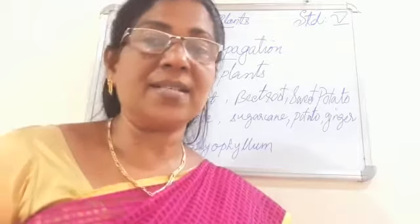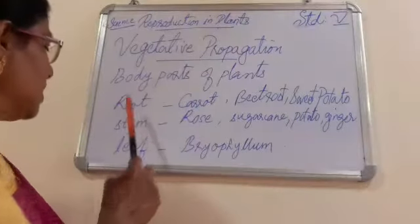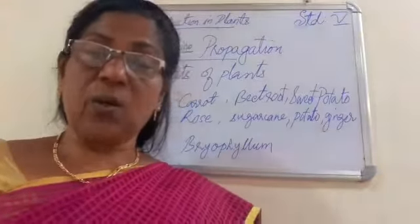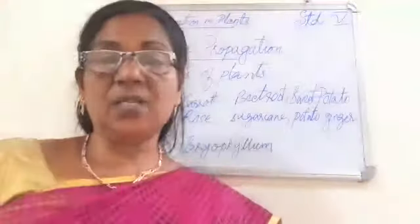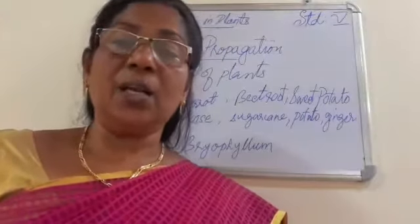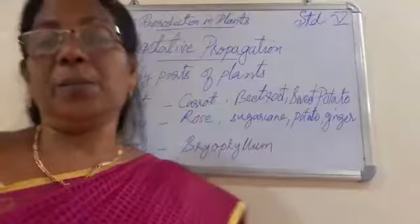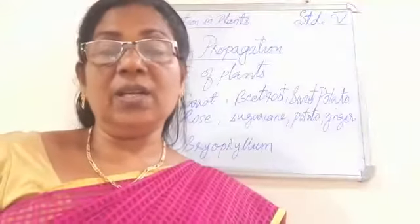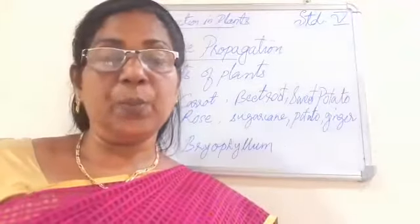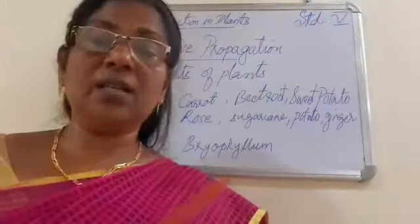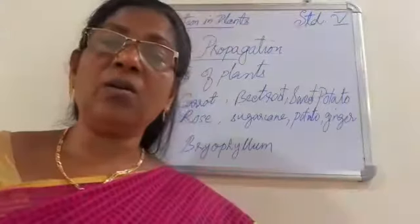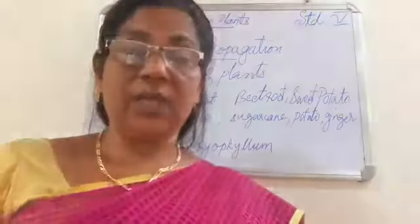The body parts of a plant are the root, stem, and leaf. These are the vegetative parts of a plant, and some plants reproduce through these body parts. When a plant reproduces through its vegetative parts, the process is called vegetative propagation or vegetative reproduction.